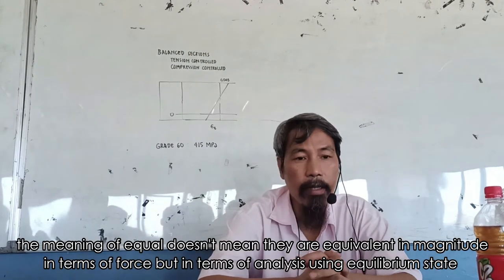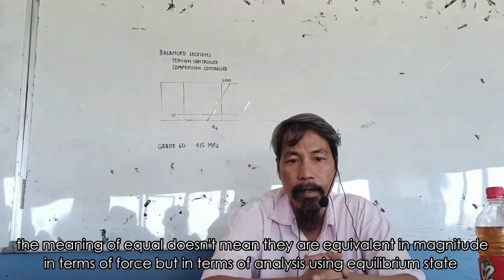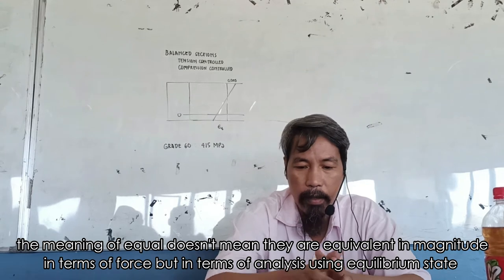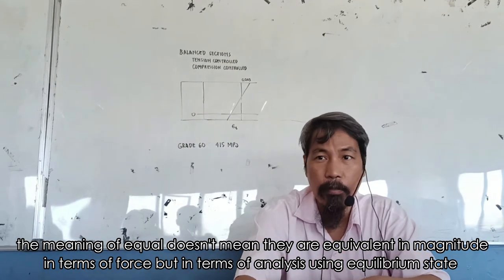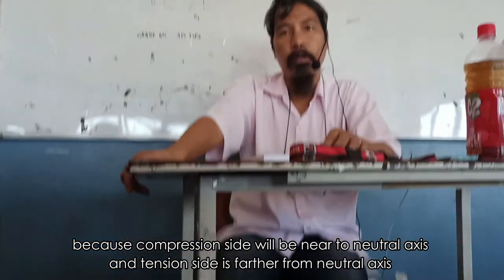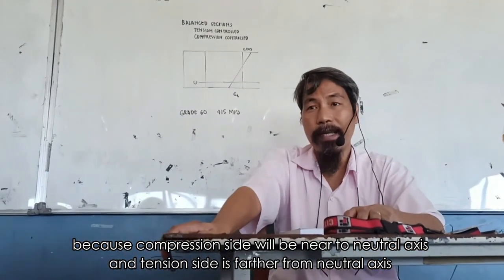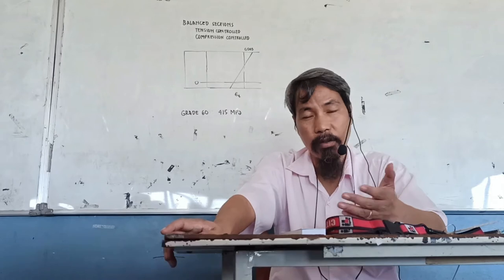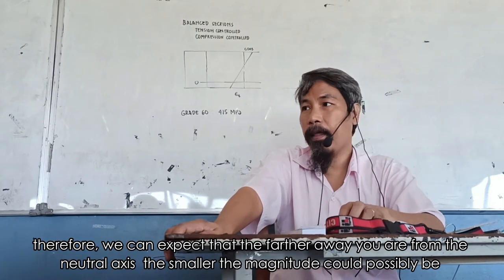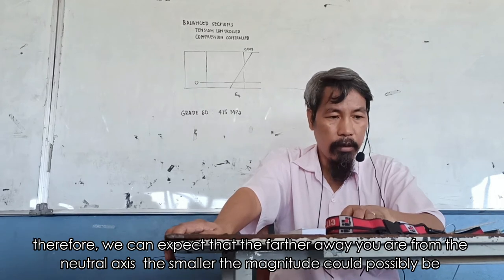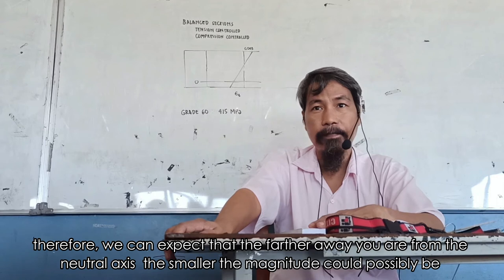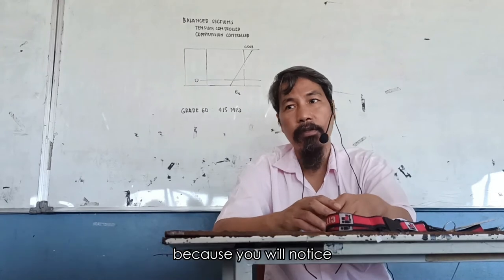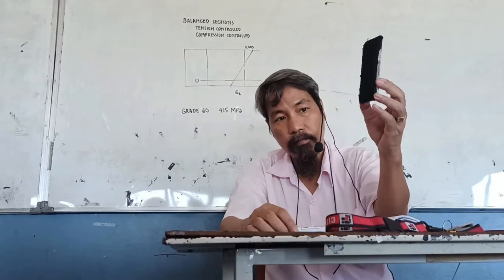The meaning of equal doesn't mean they are equivalent in magnitude in terms of force, but in terms of analysis using the equilibrium principle. The compression side may be near to the neutral axis, while the tension side is farther from the neutral axis. Therefore, we can expect that the farther away you are from the neutral axis, the smaller the magnitude could possibly be.